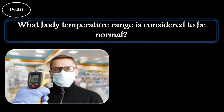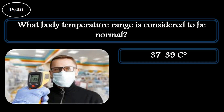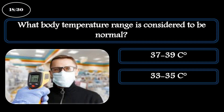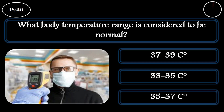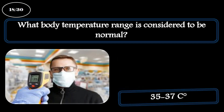Question 18. What body temperature range is considered to be normal? A: 37 to 39°C. B: 33 to 35°C. C: 35 to 37°C. The correct answer is 35 to 37°C.